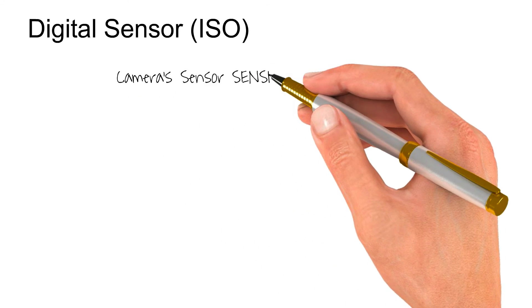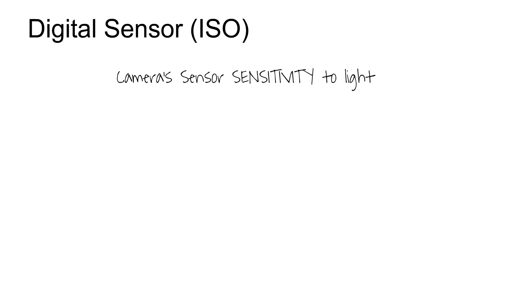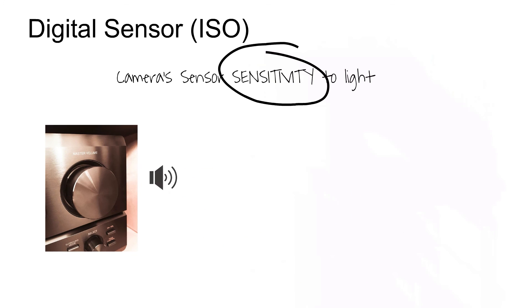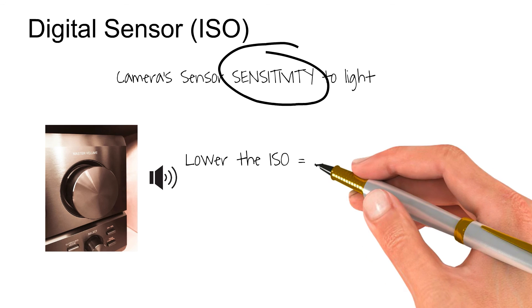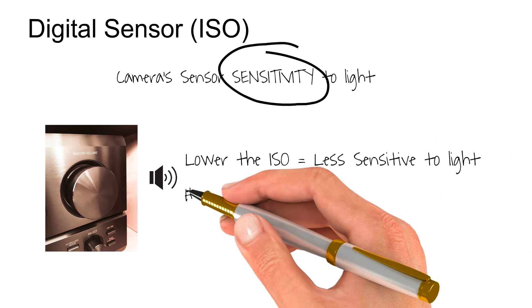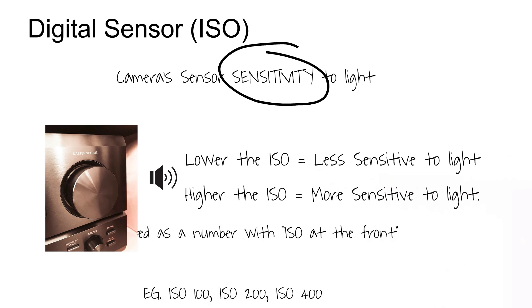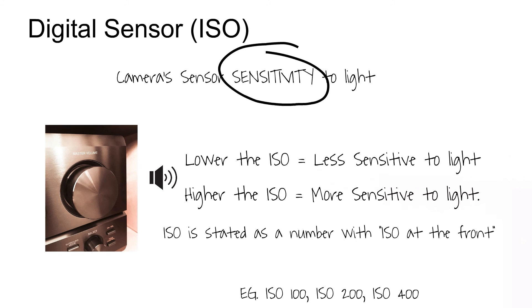The digital sensor or ISO is the last and third part of the exposure triangle, which is basically the camera sensor's sensitivity to light — sensitivity being the key word. It shows how much light is required to get the correct exposure. Think of the master volume control on your speakers: when the volume is up high, the sound is louder; when it's low, there is less sound. The lower the ISO, the less sensitivity to light; the higher the ISO, the more sensitive it is. The ISO is stated as a number — for example, ISO 100, ISO 200, ISO 400.